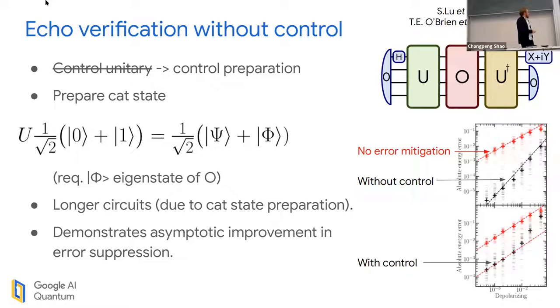Even in simulation, it shows really good error mitigation results. The error mitigation power depends on the circuits we applied it to, the noise models, and whether we did it with or without control. What's also cool is seeing this asymptotic improvement. I'm doing a simulation and increasing or decreasing the error per qubit per moment of my circuit.